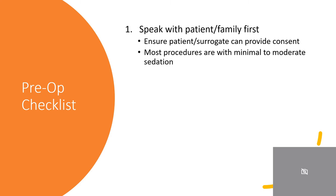If a procedure requires sedation, it will likely be minimal to moderate sedation in the form of fentanyl and Versed. In some cases where the patient has comorbidities and cannot protect their own airway, general anesthesia may be required. This will be discussed during the consenting process, but for most cases, the patient should be made aware that they will be awake during the procedure but will feel detached.